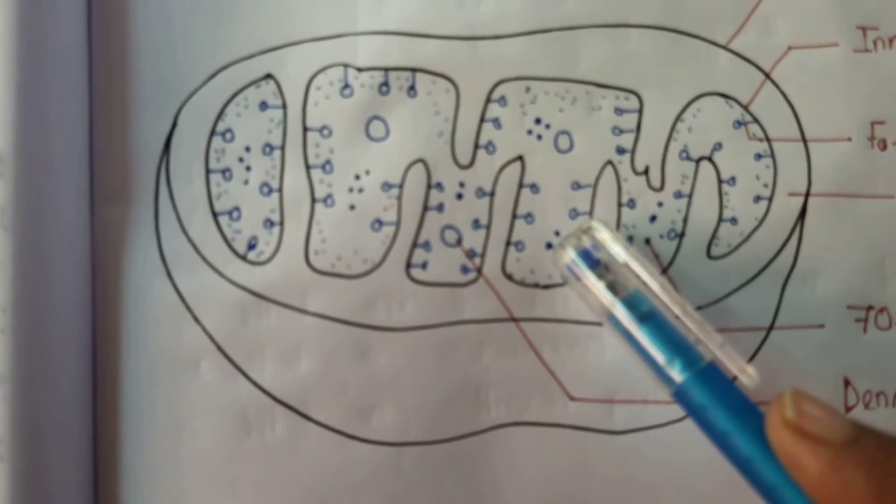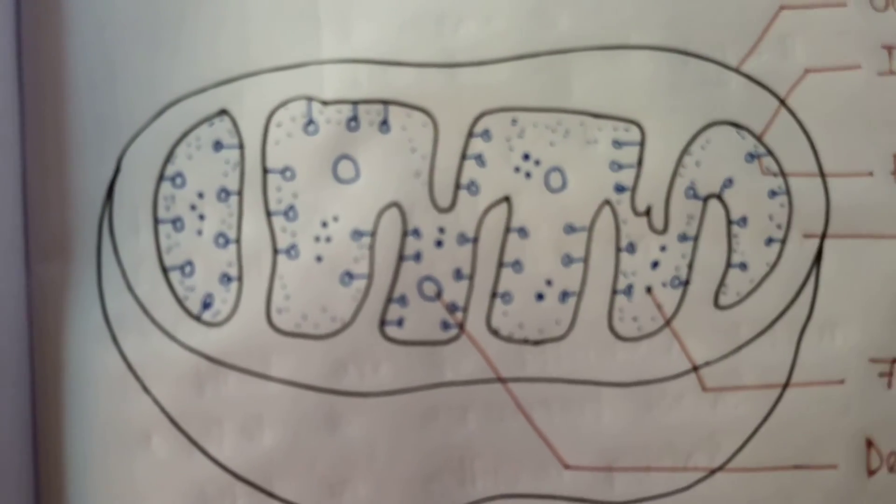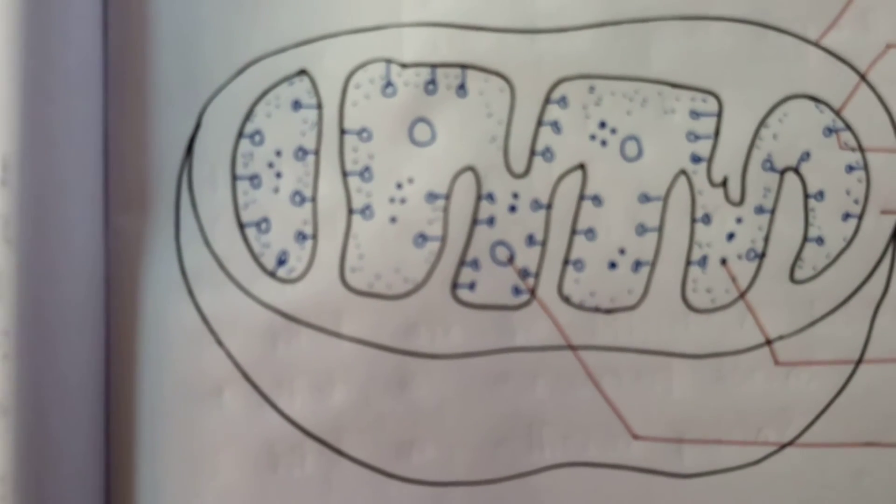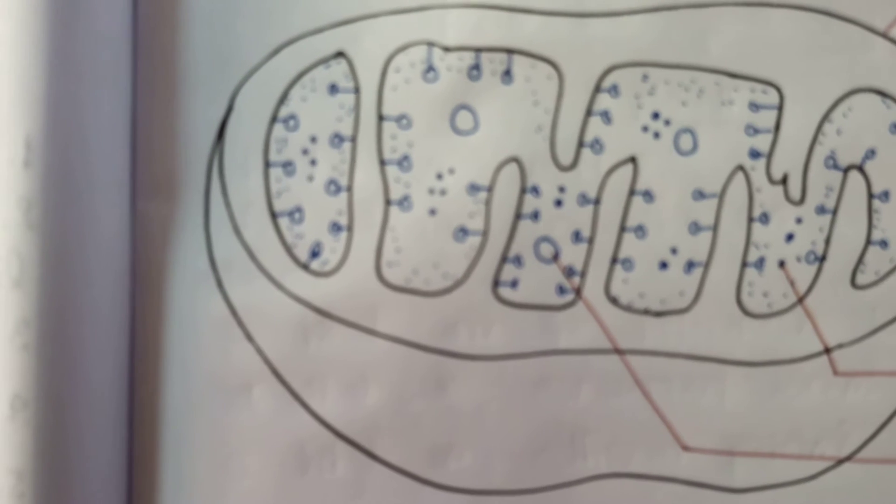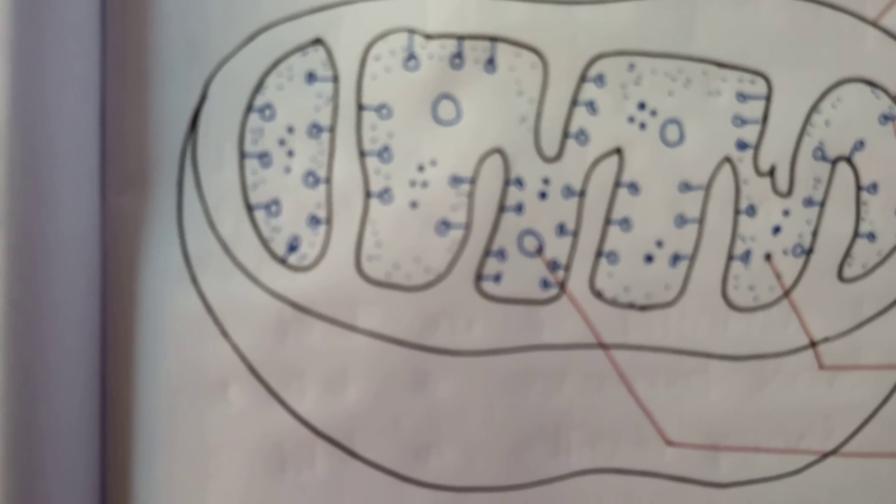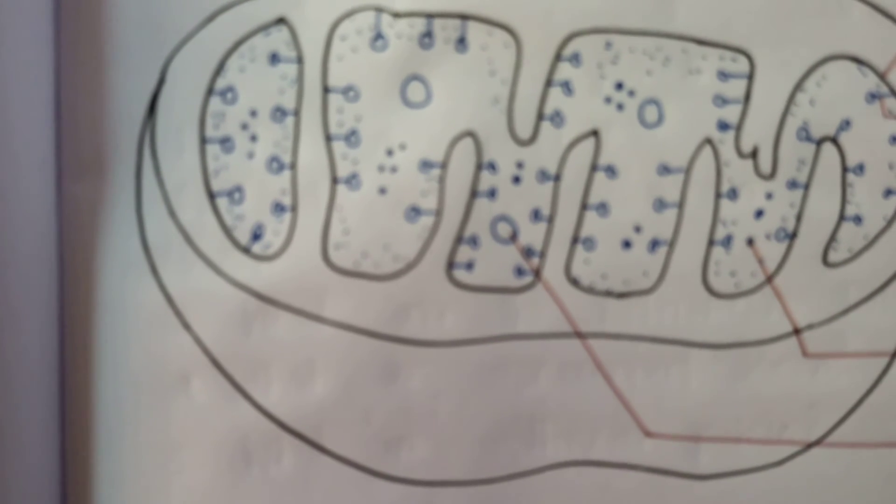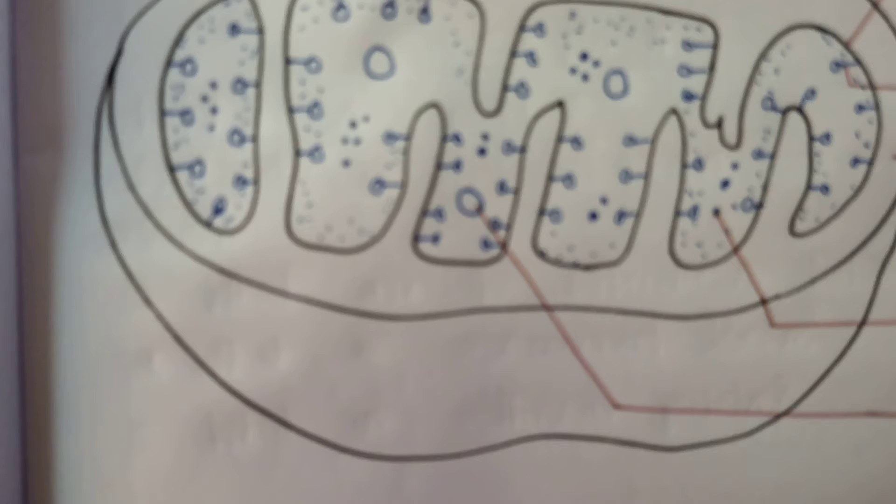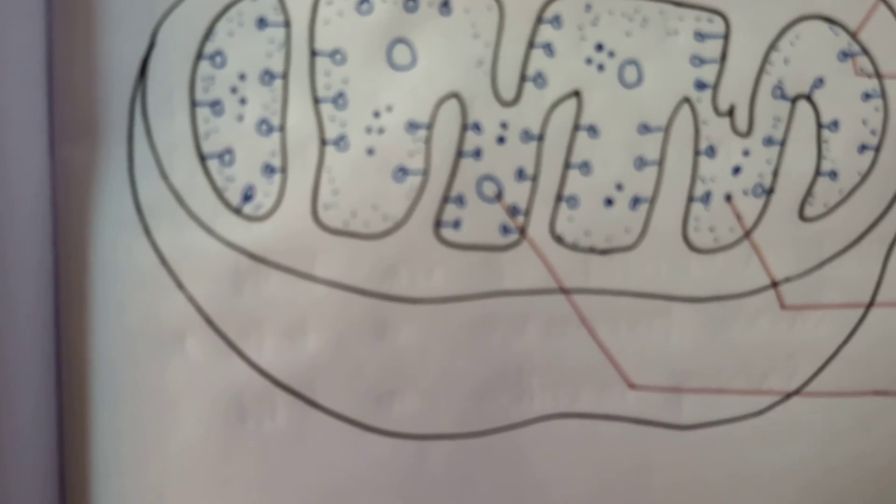These two membranes have different types of specific enzymes associated with mitochondrial function. Mitochondria are the sites of aerobic respiration. They produce cellular energy in the form of ATP, and that's why they are called the powerhouse of the cell. The matrix possesses single circular DNA as already mentioned.